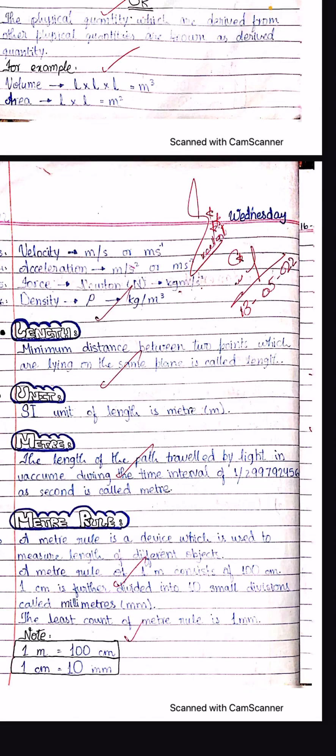The length of the path travelled by light — consider sunlight — the distance light travels during the time interval of one second divided into 299,792,456 parts: that first part of the second, the distance light covers, is equal to one meter.